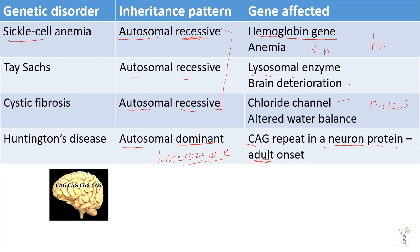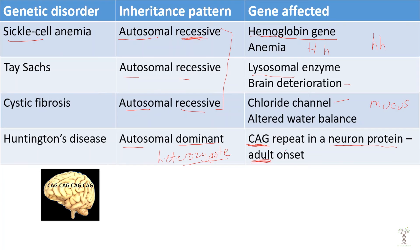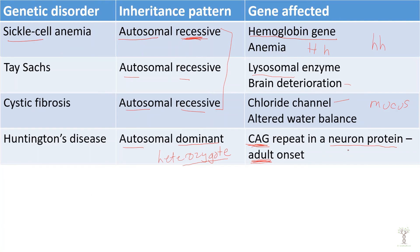Now we have genetic testing and people can find out early if they have any of these mutations. In this neuron protein, if we add a whole bunch of CAG nucleotides that will cause a mutation. This is a neurological progressive disease.